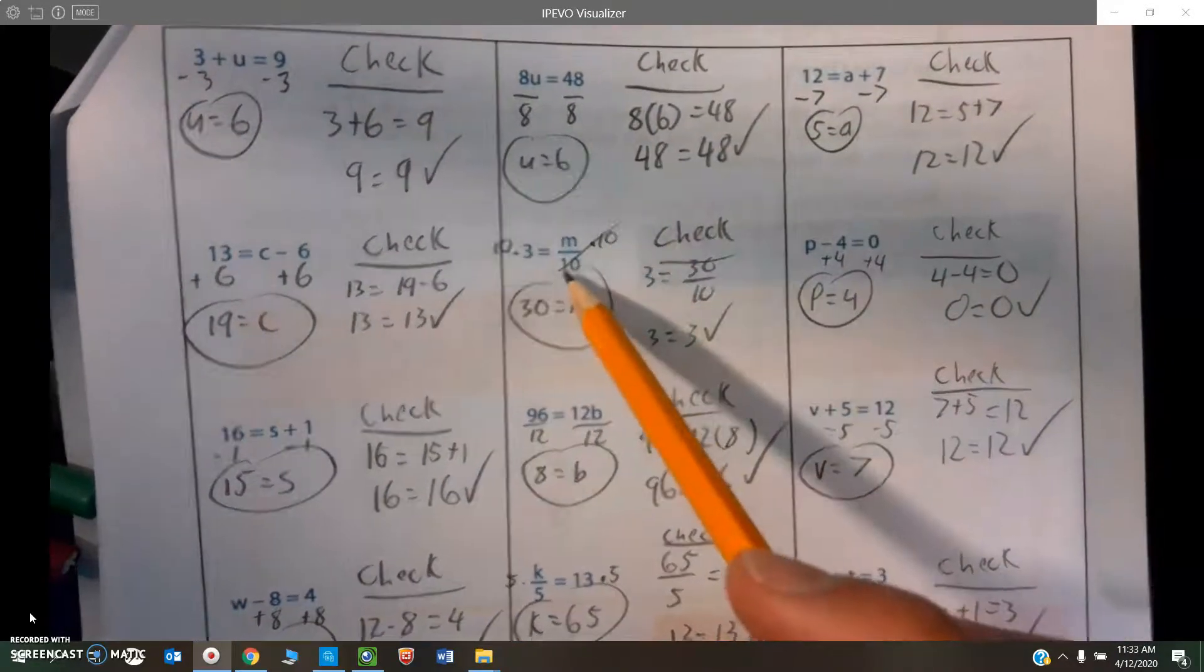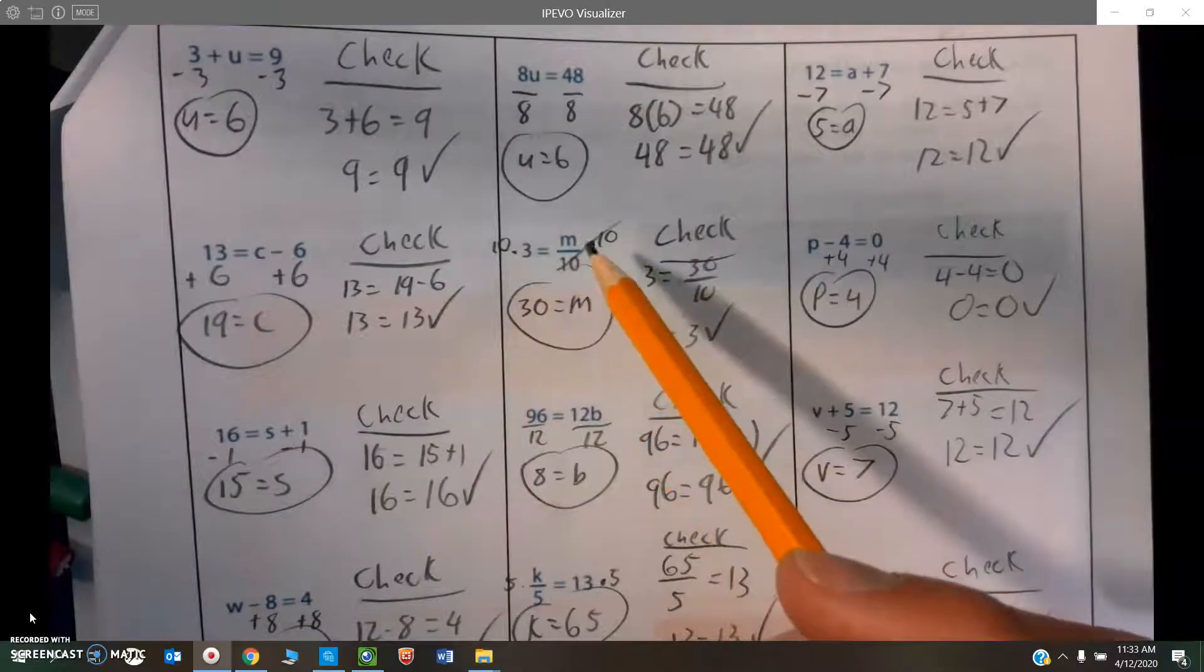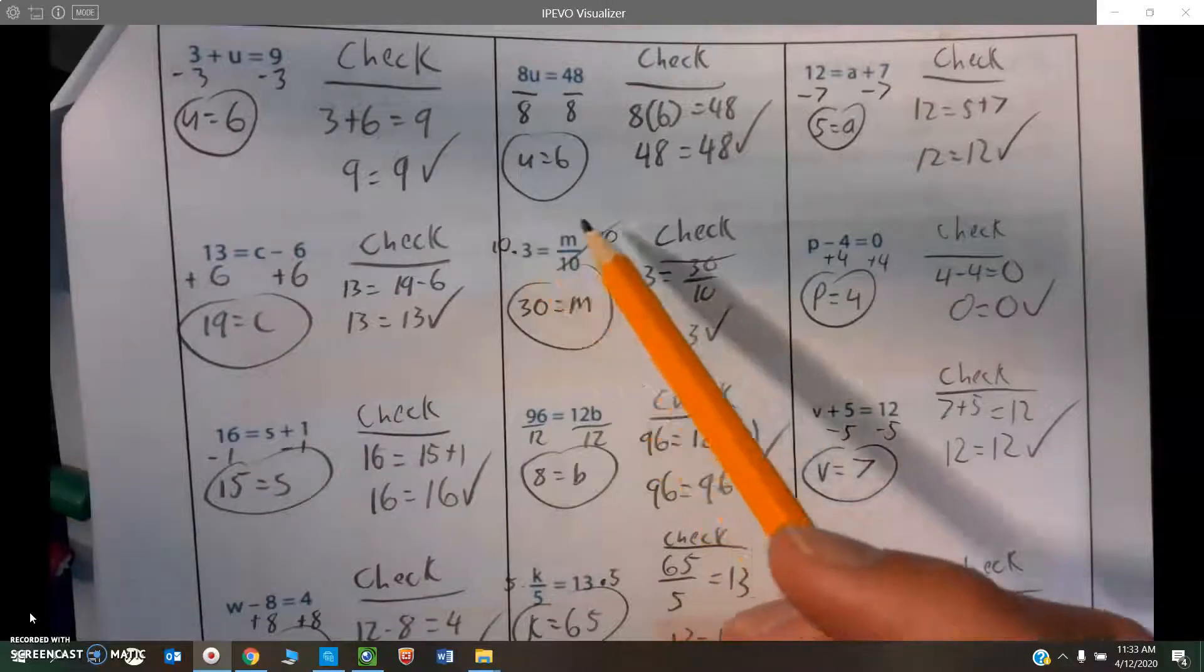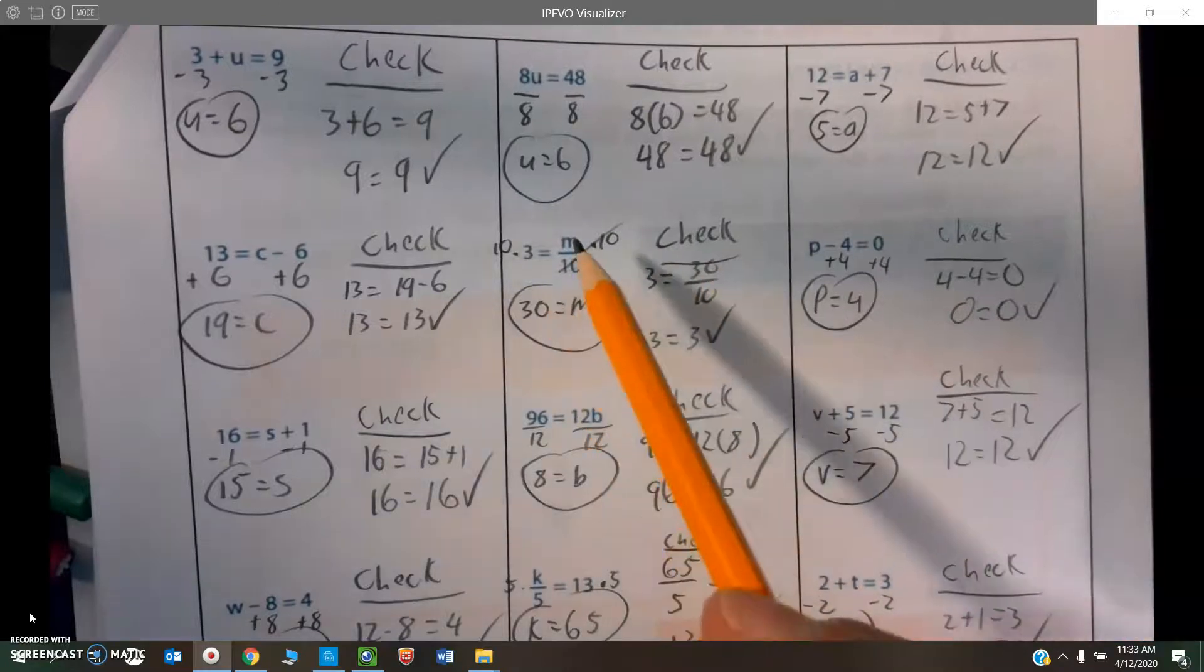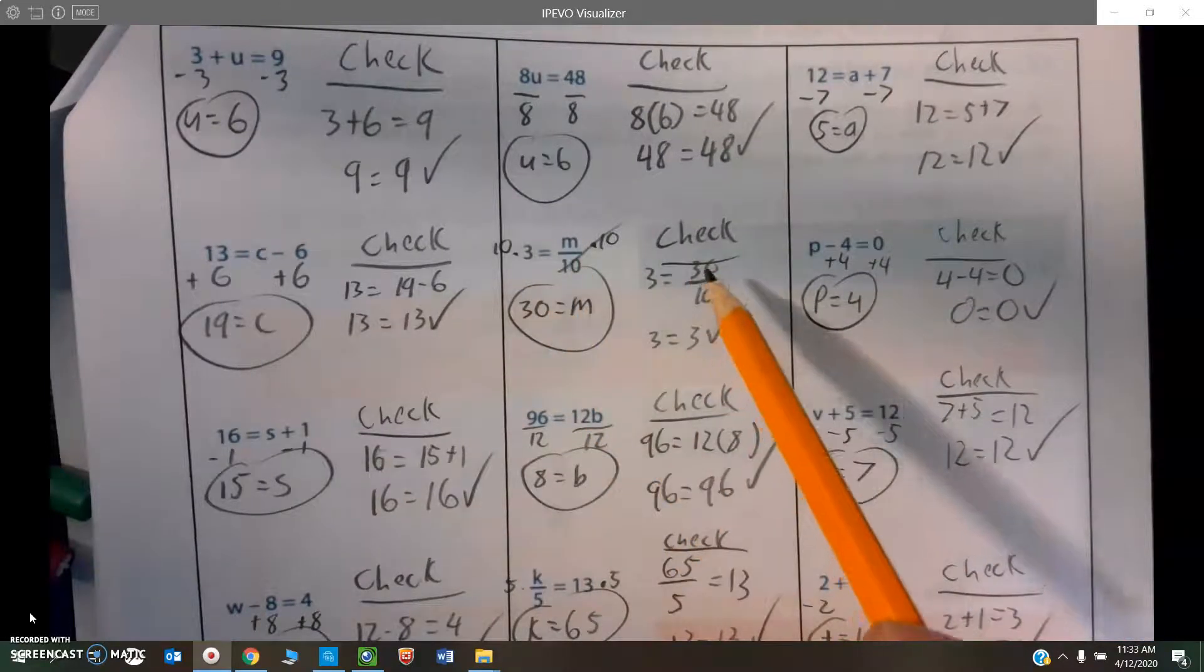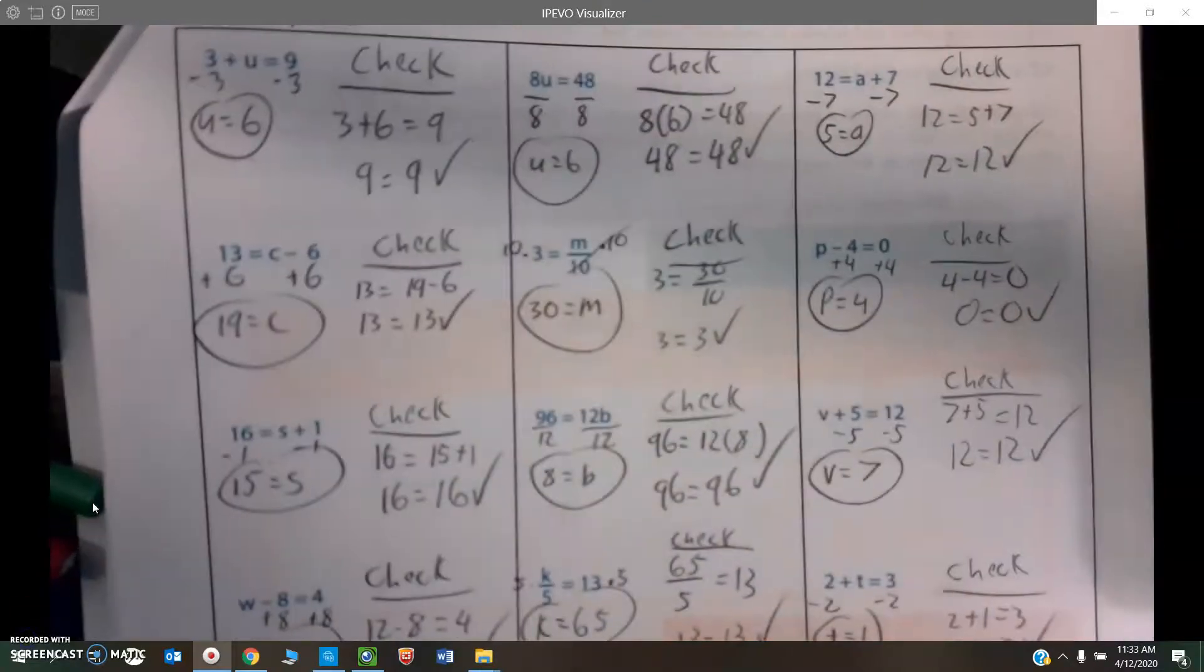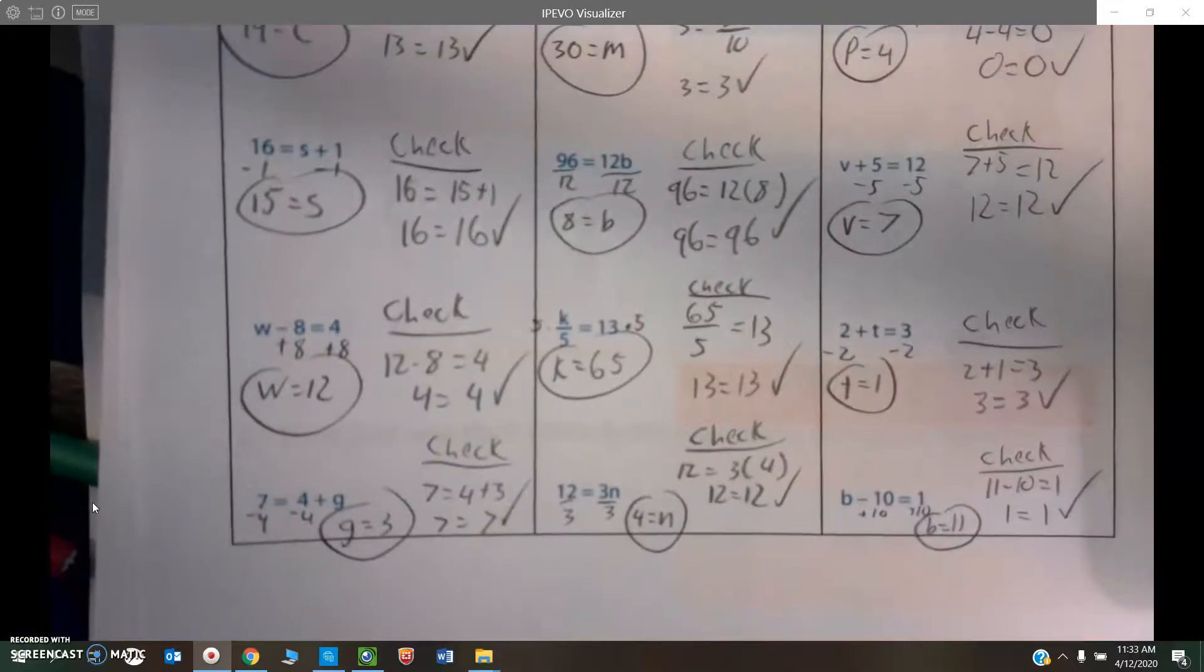So same here. This one's a division one. What divided by 10 is 3? So I need to use the inverse. So instead of dividing by 10, I'll multiply by 10, and I get 30. I'm going to check my work with substitution. Put 30 in for m, and 30 divided by 10... 30 divided by 10 is, in fact, 3. Okay? So there are your answers for that.